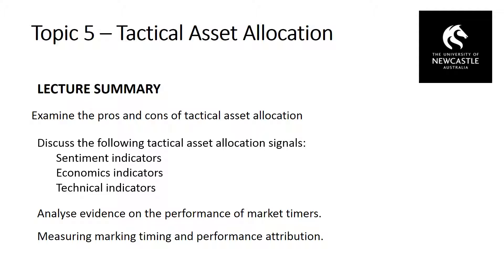The third tactical asset allocation signal is a technical indicator — the idea that you can use past prices to predict future prices. The most common application is the moving average. If we take the moving average index value from, say, the last 200 days and compare the current index price to that moving average, the idea is that when the current index is above the historic average, the market is trending upwards and we want to buy. When the current price is below that moving average, it implies the market is trending downwards and we want to sell. This technical indicator is based on the belief that markets are not perfectly efficient — there is a degree of predictability and trends in market indices.